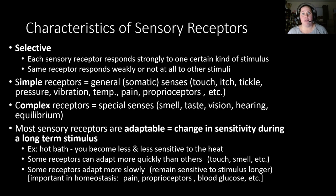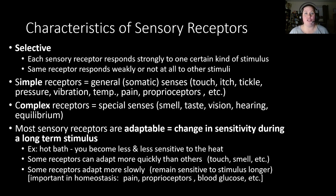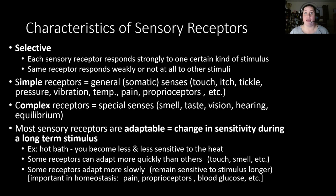Some receptors adapt more slowly, remaining sensitive for a longer period of time. These are important for homeostasis — like proprioceptors knowing where your arms and legs are, or receptors monitoring blood glucose levels. You don't want to adapt to low blood sugar because that causes dangers in uncontrolled diabetes. Pain is another slow-adapting receptor because it tells your body something is wrong — you don't want it to adapt too quickly.